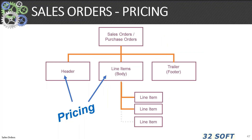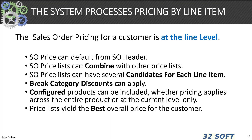Pricing drives sales order processing, and sales orders drive the business. There are three elements of a sales order: header, line, and trailer. We'll concentrate on pricing impacts. In QAD, sales order pricing for a customer is at the line level. Header data may default to the line, but it is modifiable at the line level. The price list can be combined with other price lists. You can have several candidates for each line, set price break category discounts for designated customers, and price either the entire configured product or only the current level.